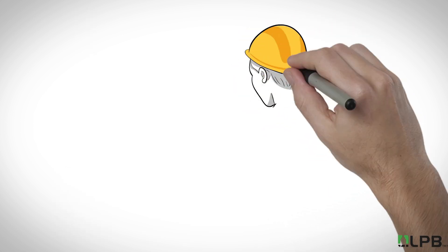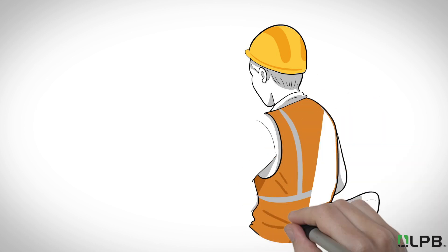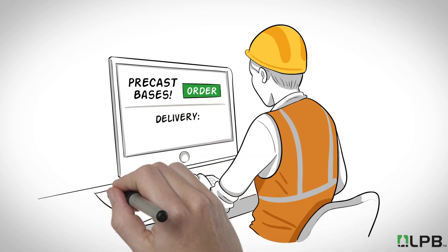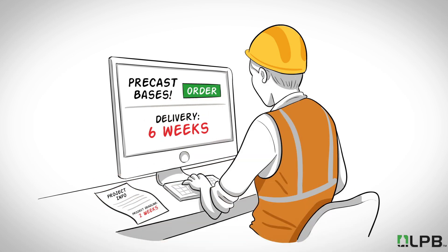Using traditional precast light pole bases eliminates the need to purchase raw materials and construct the bases in the field, but the ordering process is complicated and can take four to six weeks to get the final product.